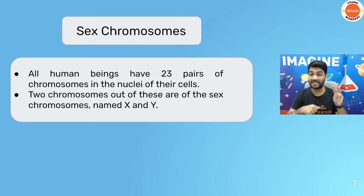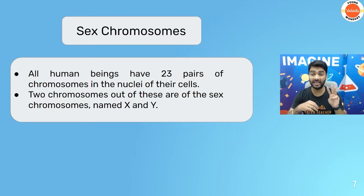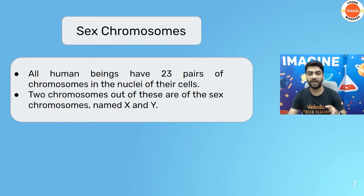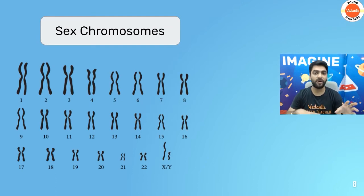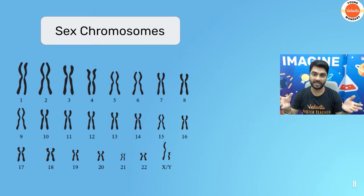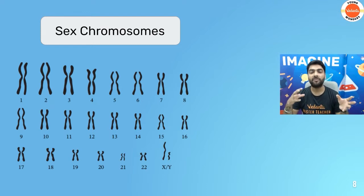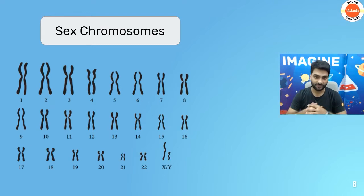A human male releases 3 million sperm cells at a time. Out of these 3 million, 1.5 million will carry the X chromosome and 1.5 million will carry the Y chromosome.